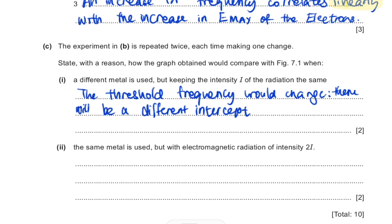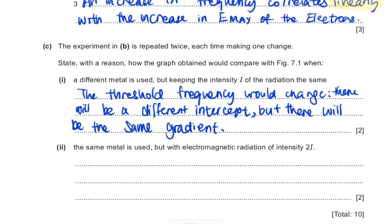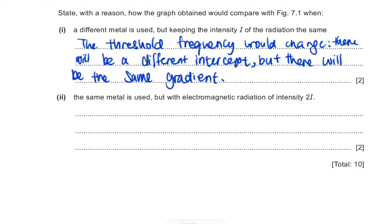However, even with a different intercept, the gradient remains the same — because the gradient is always Planck's constant, which doesn't change. When describing a linear graph, you should always address two things: the intercept and the gradient. At A-level physics, most graphs we deal with are linear, like this one.